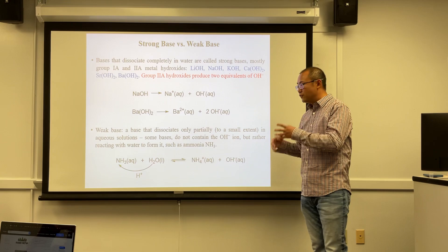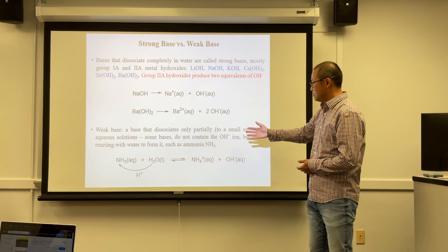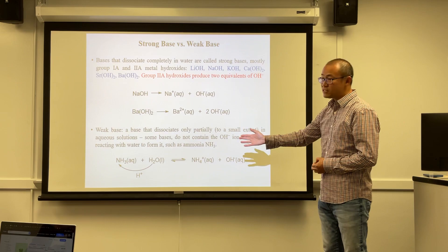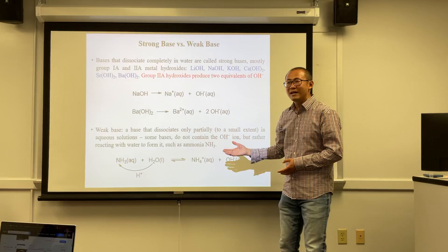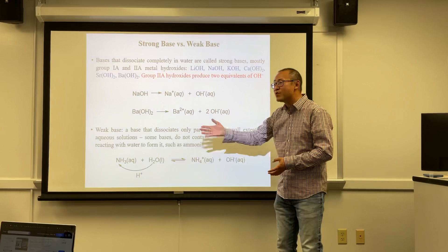There are also weak bases. The key example is ammonia, NH3, which is classified as a weak base. Interestingly, NH3 doesn't even contain OH— so how does it produce hydroxide in water?